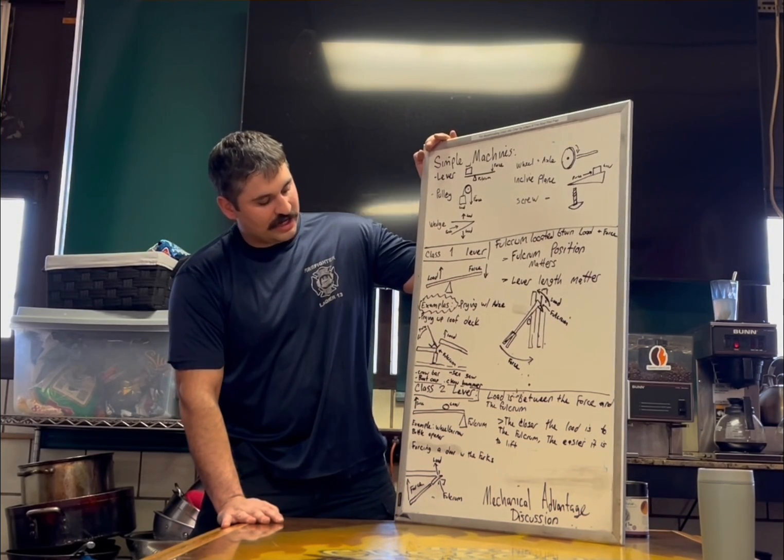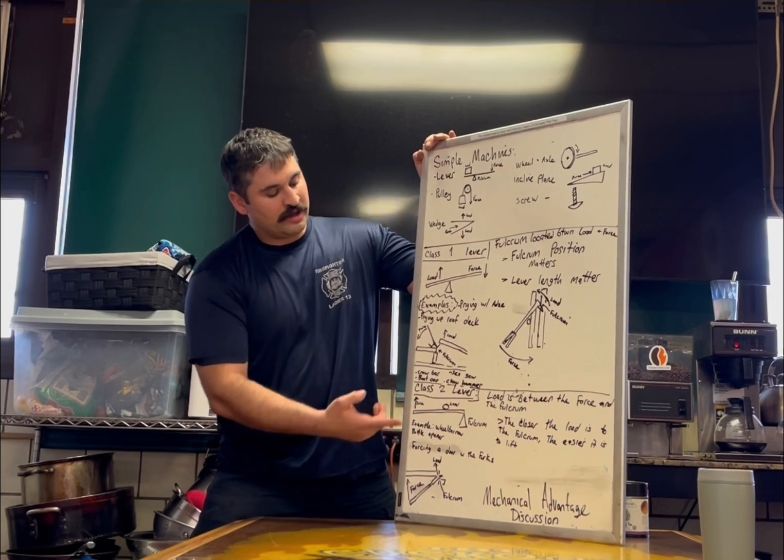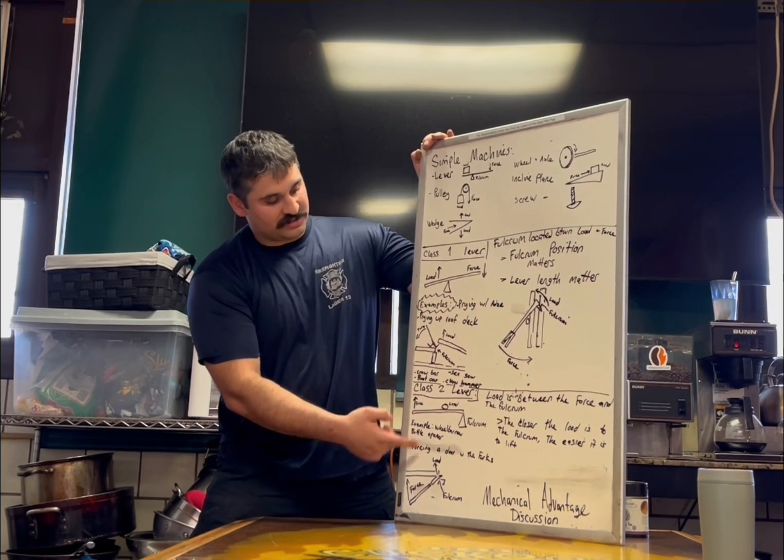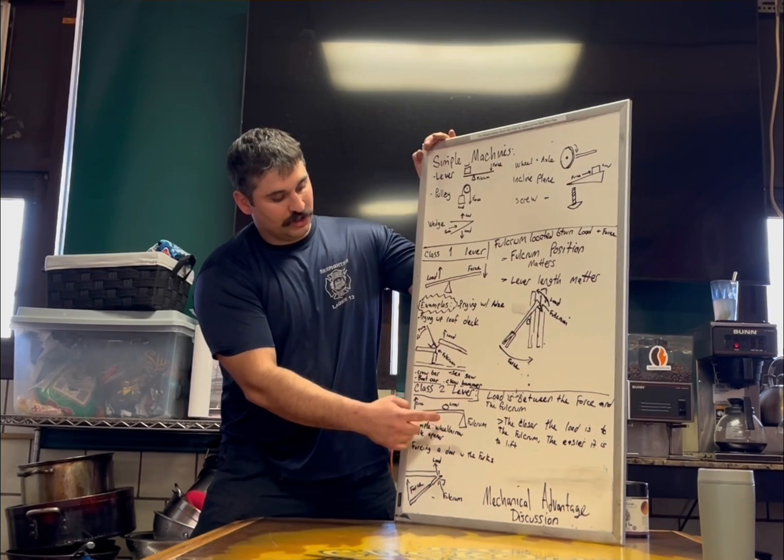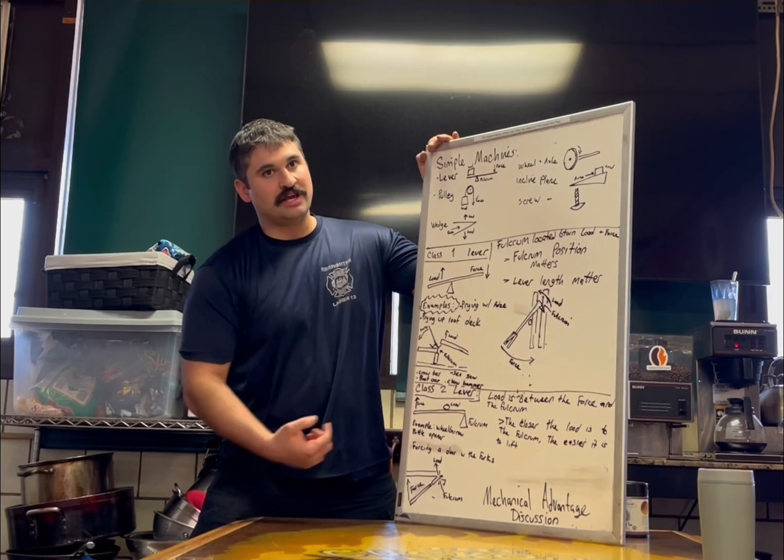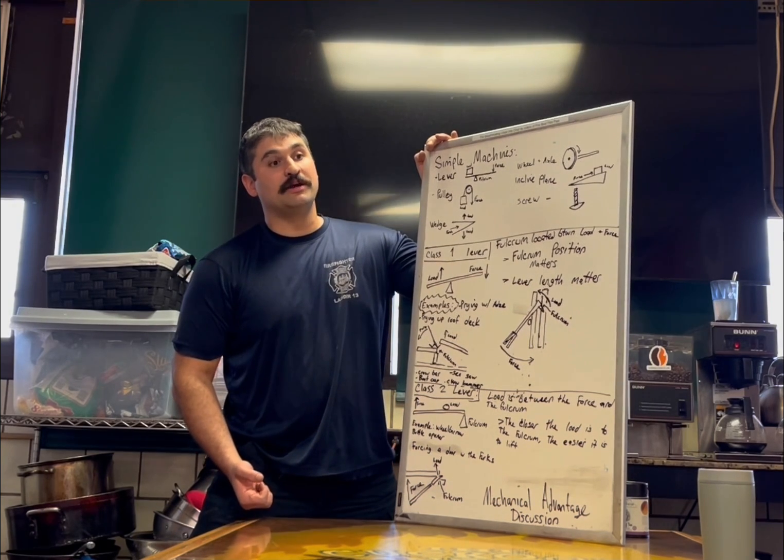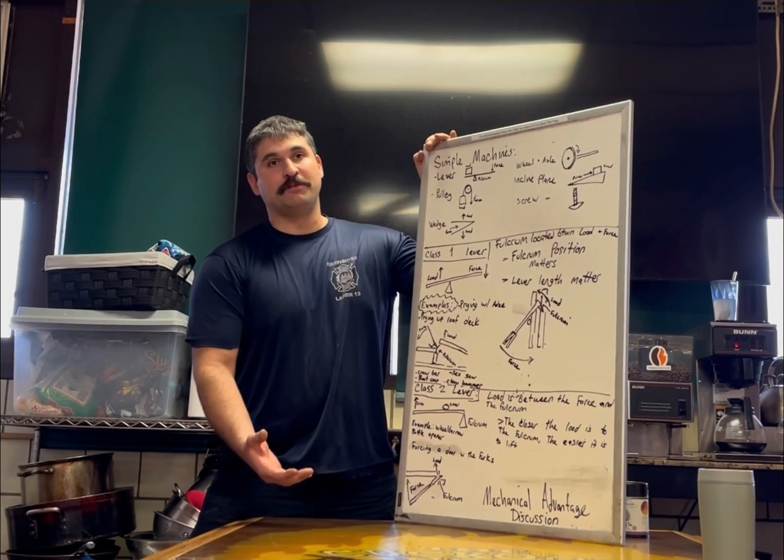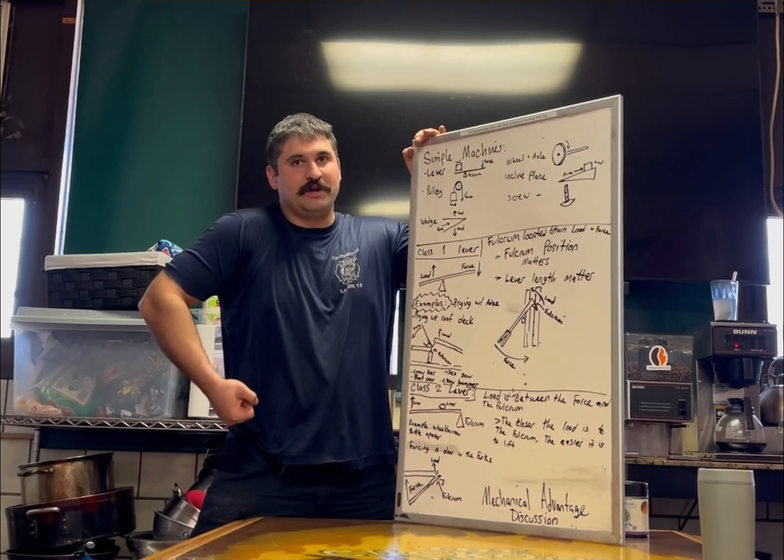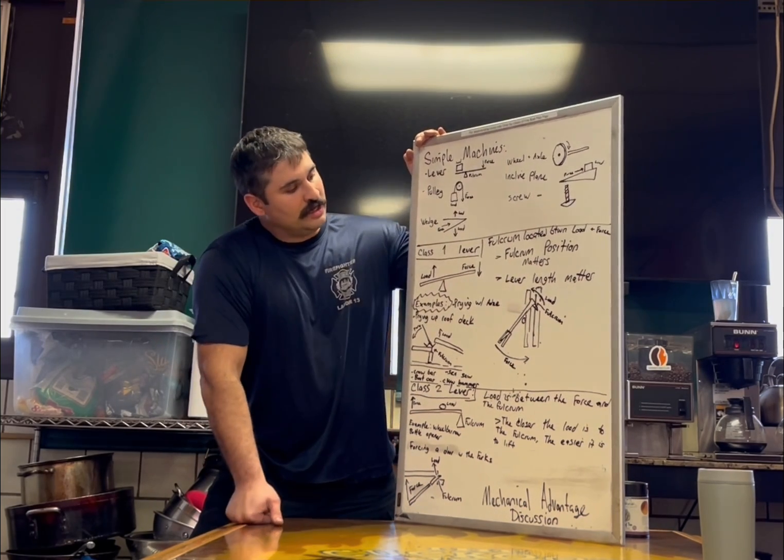Class two levers are any kind of a mechanical advantage system or lever system where the fulcrum is on one end, the load is in the middle, and the force is on the opposite end. Imagine a wheelbarrow, right? You got a bunch of weight in the middle of the wheelbarrow, you pick it up, you roll. The fulcrum is on that far end.